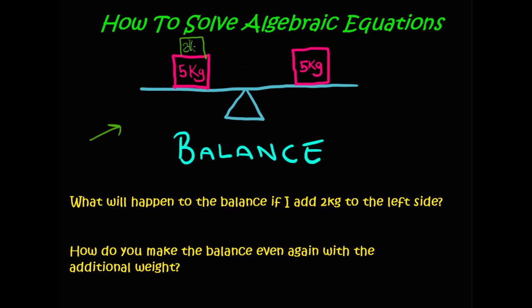The balance is going to tilt, isn't it? How do you make the balance even again with the additional weight? Well, you're going to want to add that same 2 kg block to the right side. As you see, in order to maintain this equality or this balance between the left side and the right side, anything I do to this side, I have to also do to this side.